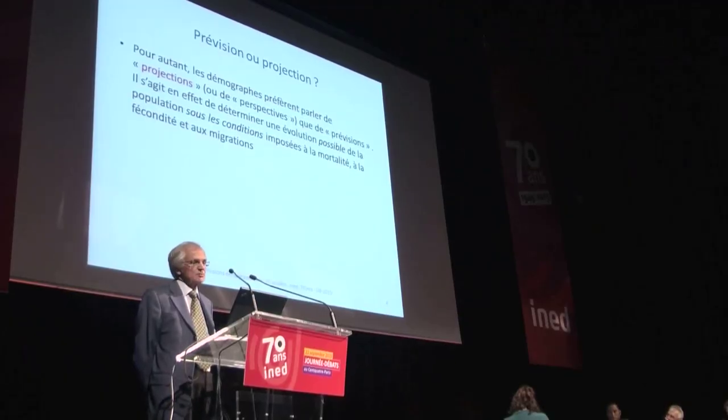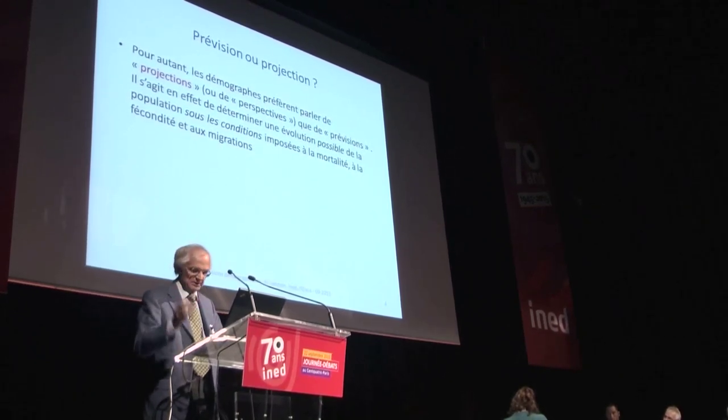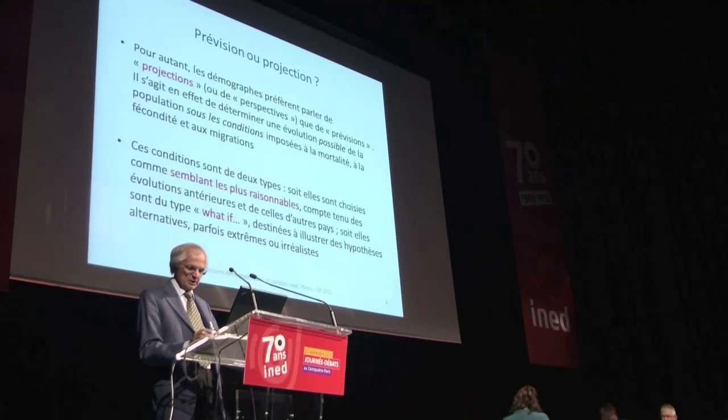I would like to clarify a point of terminology. Demographers prefer the term 'projection' to 'forecast,' because what we are attempting to determine are possible trends in the population under conditions we set for mortality, fertility, and migration. Those conditions can be divided into two kinds: conditions that seem the most reasonable based on past trends and the current situation, and 'what-if' conditions used to illustrate alternative extreme or unrealistic scenarios — for example, what if fertility or mortality were to stop?